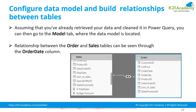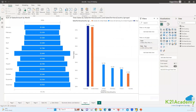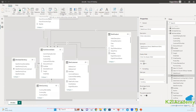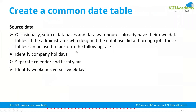To configure the data model and build relationships: after retrieving and cleaning your data in Power Query, go to the Modeling tab where the data model is located. Inside the Modeling tab, there is an option to Manage Relationships, from which you can create and manage all relationships in your model.